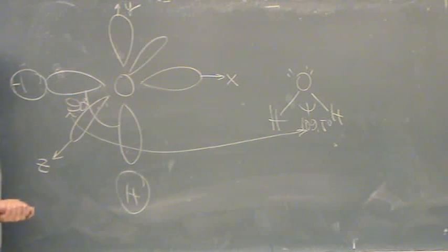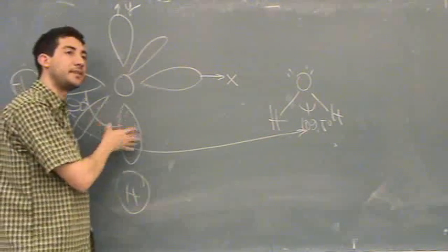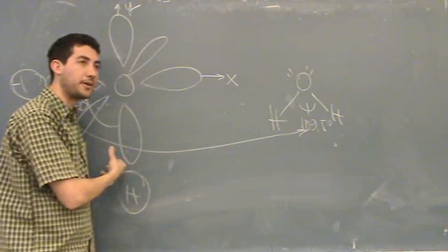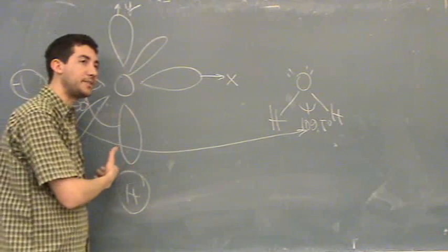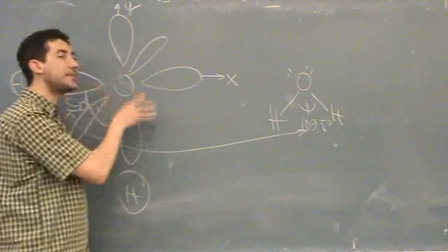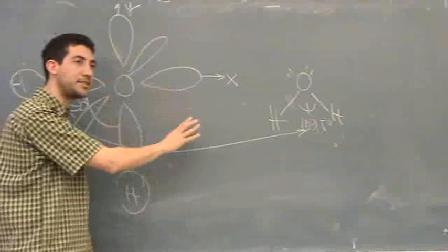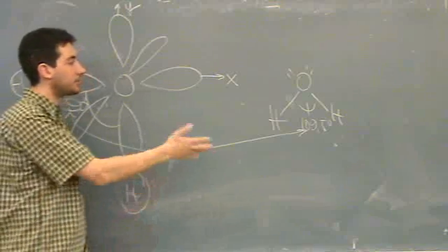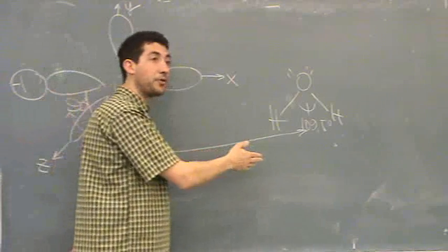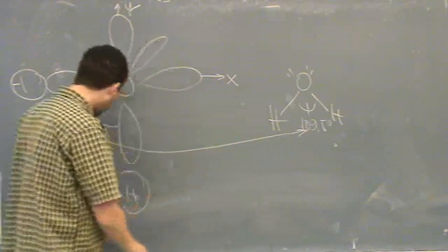So the deal is that the valence bond theory with just the p-orbitals don't work out for us. And that's where we come up with hybridization. So you say, oh, these actually hybridize and they stir up and mix up. And that's when we did all that hybridization stuff to show where the 109.5 bond angle is.